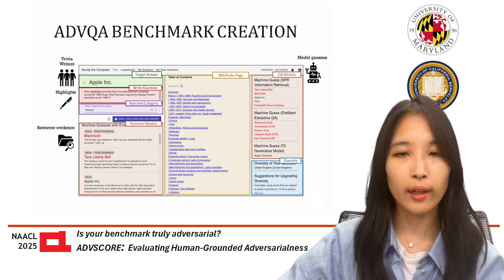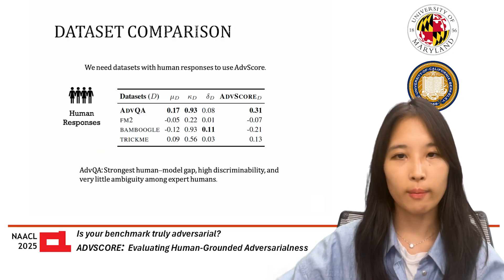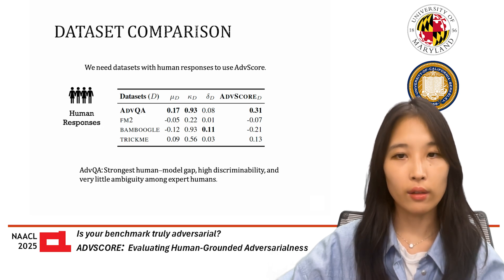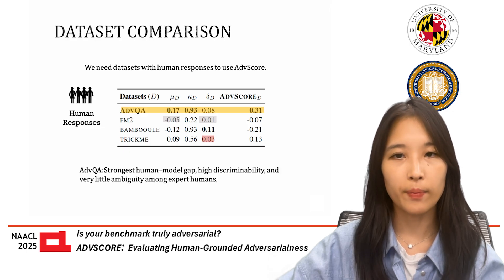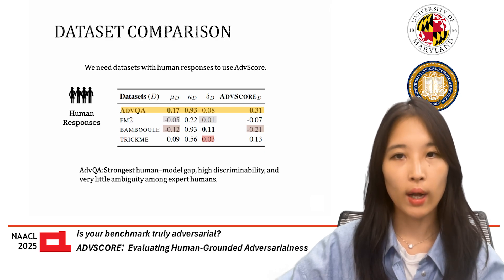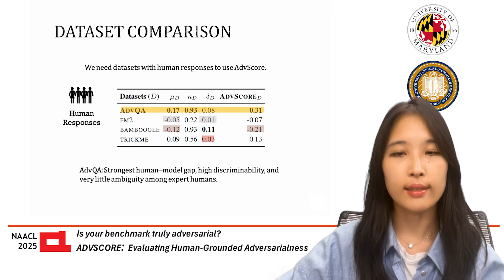The questions were used in a large-scale human-model competition, where we collected multiple model and human answers. To evaluate ADB score, we applied it to four QA benchmarks selected because they include skilled human responses. ADBQA had the highest ADB score of 0.31 — the strongest human-model gap, high discriminability, and very little ambiguity among expert humans. TrickMe showed some adversarialness but was less informative. FM2 had low discrimination and minimal human-model gap. But Boogle was anti-adversarial: models outperformed humans, giving it a negative ADB score — the opposite of what we want.